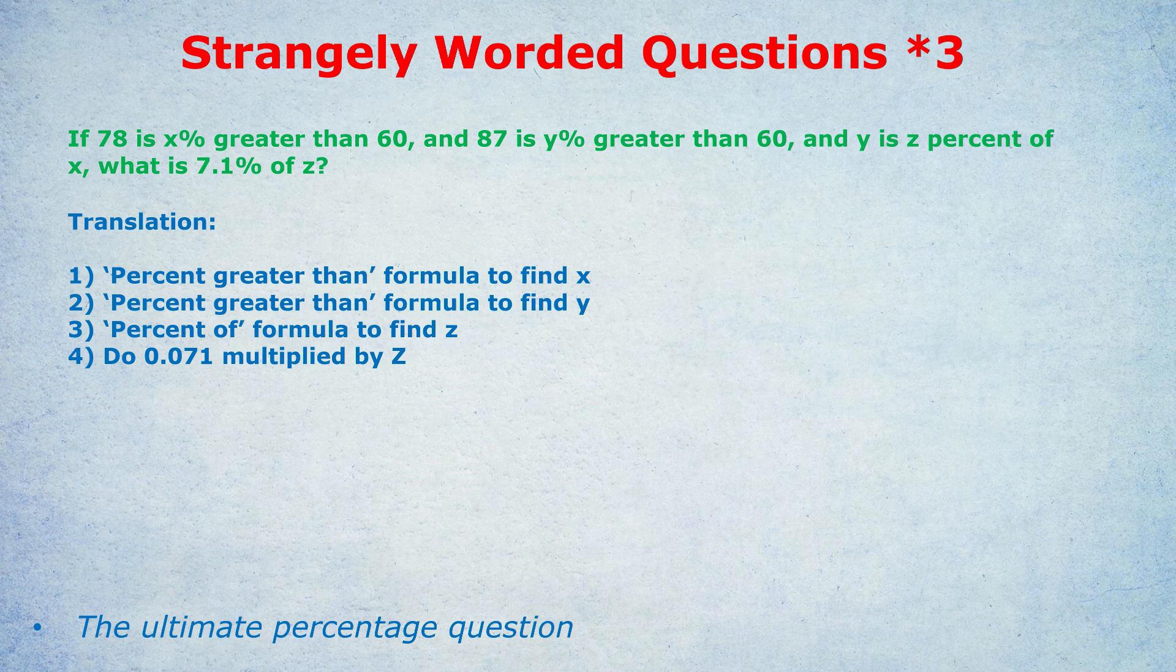By the way, if you don't know any of these formulas, I'm going to be showing you in a second. And finally, when they ask 7.1% of Z, that just means do 0.071 multiplied by Z. I made it 7.1% just to see if I could fool some of you with the tricky decimal there.